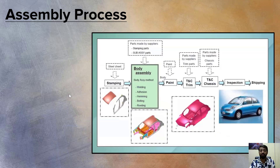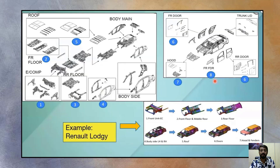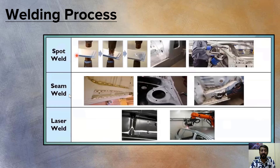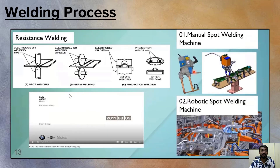The assembly process of BIW is shown here, with an example from the Renault Lodgy assembly process. The various BIW joining methods include welding — specifically spot welding, seam welding, and laser welding — as well as fasteners using bolts, rivets, clinching, and adhesives. Examples of spot welding, seam welding, and laser welding processes are illustrated.